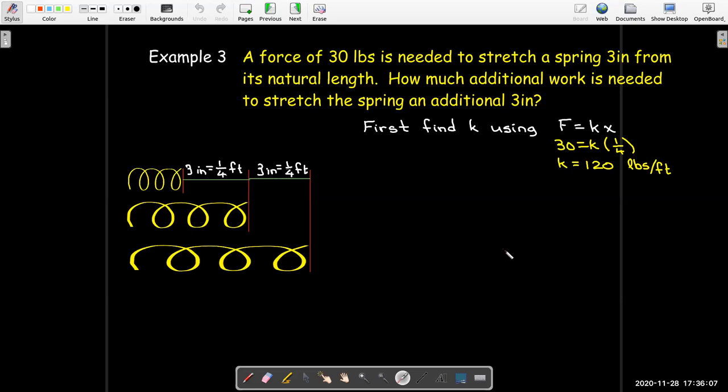So, now that we know the spring constant, we can make use of the previous example and say to go from one quarter foot to a half foot, so that's 3 inches to another 3 inches. We can just put the bounds as 1 quarter to 1 half. Our spring constant is 120, so our integrand is 120x. And we can evaluate that just using the power rule. And then, the antiderivative will be 60x squared.